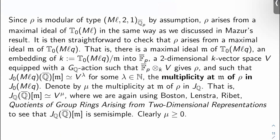Okay, great. So since we're assuming ρ is modular of type (Mℓ, 2, 1) over Q̄_p, right? So ρ arises from a maximal ideal of T_0(Mℓ) in the same way as we discussed in Mazur's part of the proof last video. It's straightforward to check that ρ also then arises from a maximal ideal which we'll call m of T_0 at level Mℓq so we can bump up the level to Mℓq and we still get a maximal ideal that gives us ρ. That is, as discussed last video, there's a maximal ideal m of T_0 at level Mℓq. An embedding of k which is T_0(Mℓq) mod m into F̄_p, a two-dimensional k vector space V equipped with a Galois action such that V tensored up to F̄_p gives me the representation space for ρ and such that J_0(Mℓq)(Q̄)'s m-torsion is isomorphic to V^λ for some λ and n. Crucially, λ is a positive integer. It cannot be zero. Okay, that's because ρ is modular of type (Mℓ, 2, 1). And we call λ here the multiplicity at m of ρ in J_0(Mℓq).